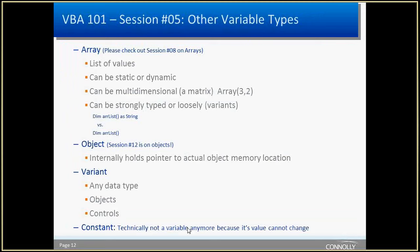There are other variable types — arrays. I'm not going to go too much into that because Sergi is going to cover arrays in session eight. An array is basically a list of values. It can be static or dynamic — when I say static here, I just mean it doesn't change in size. You can define your array with three elements and it can never change, or you can define it without a number of elements and later add to it. It can also be multidimensional, like a matrix.